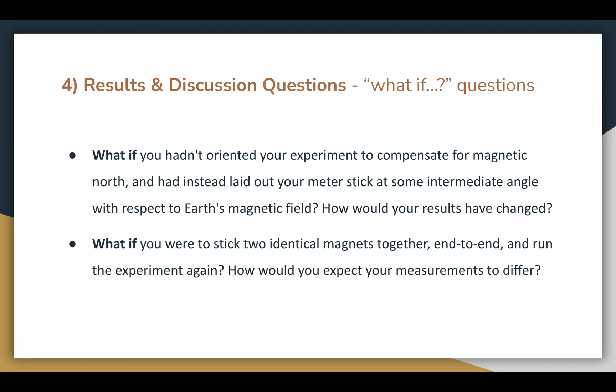If we had stuck two magnets end-to-end, I'd expect the measurements to all be multiplied by some scalar constant. In other words, I'd expect more or less the same results, but with different numbers.